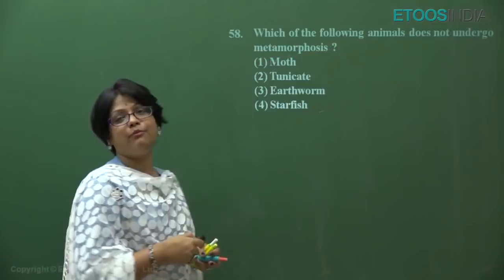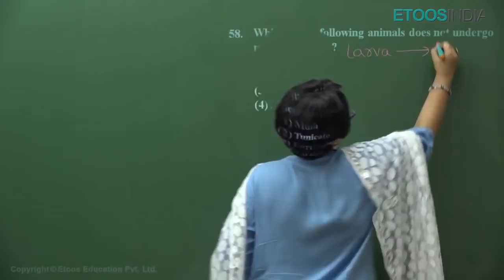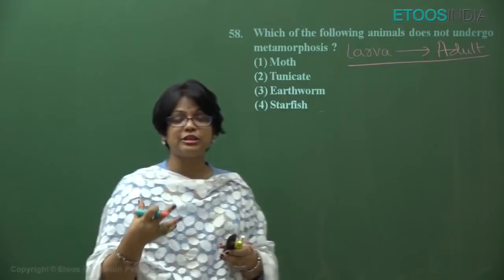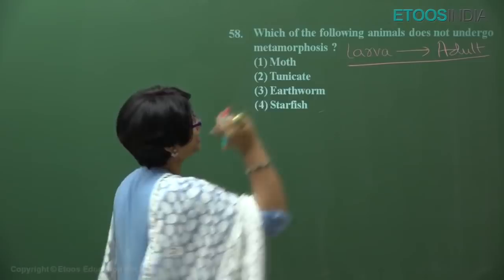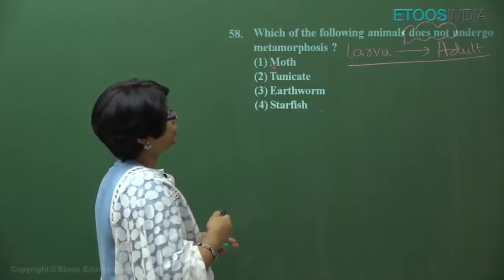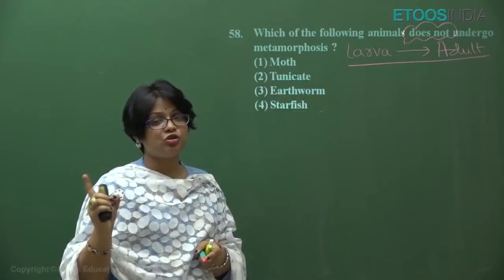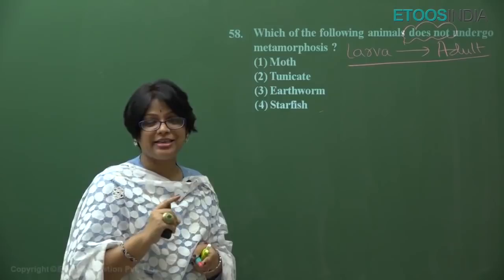Question: which of the following does not undergo metamorphosis? Metamorphosis means conversion of larva into adult — a change in external appearance. Among arthropods, only silverfish shows no metamorphosis with direct development; all others have indirect development with a larval stage. Moths undergo metamorphosis. Tunicata, being urochordates, have a larva with a notochord in the tail that undergoes retrogressive metamorphosis.